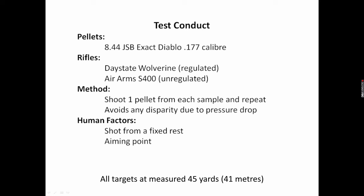The way that the tests were conducted is I shot one pellet from each sample before cycling back and repeating. So say for example I had three groups of pellets A, B and C. I'd shoot one pellet from A, then one pellet from B, then one pellet from C and then go back shoot the second pellet from A, second pellet from B, second pellet from C. The reason I did that is to avoid any disparity in the groupings due to the pressure drop. Shouldn't have been an issue for the regulated rifle but may have been for the unregulated.